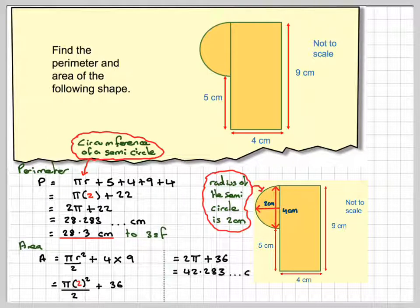If we take our calculator out, we're going to have 42.283 cm squared, which rounded to three significant figures would be 42.3 cm squared.